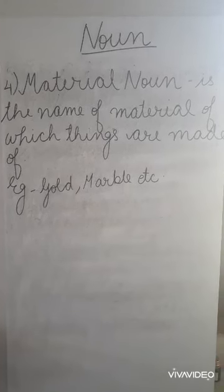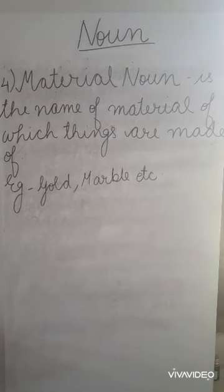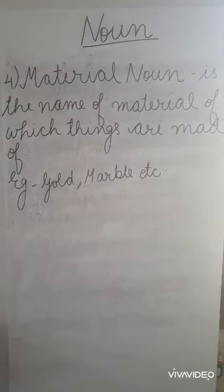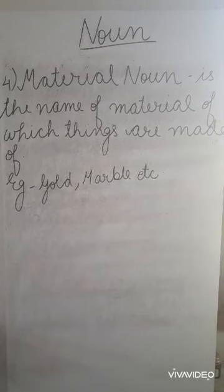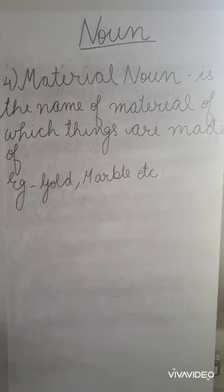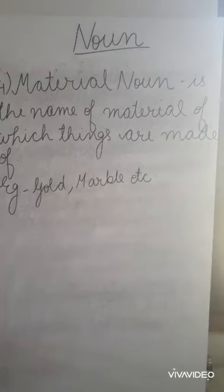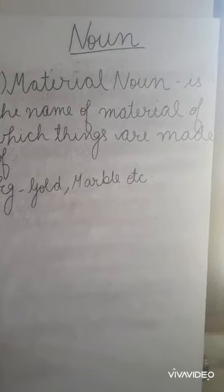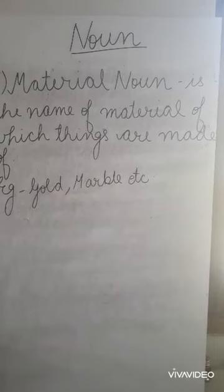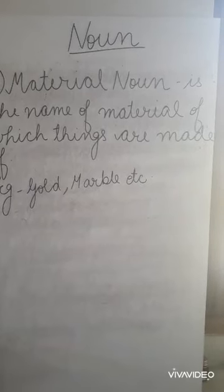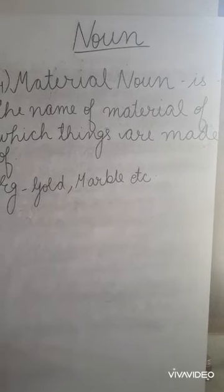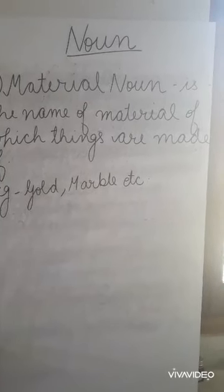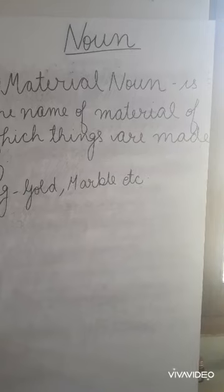The fourth kind of noun is material noun. Material noun is the name of the material of which things are made. It refers to things which are made of a particular material, like gold, marble, wood, etc.